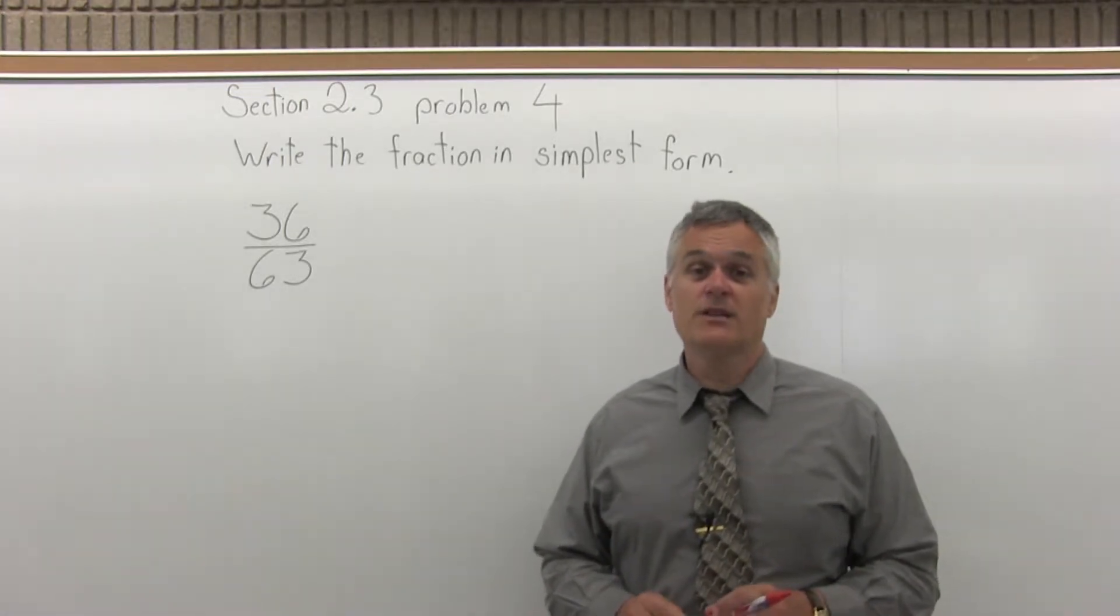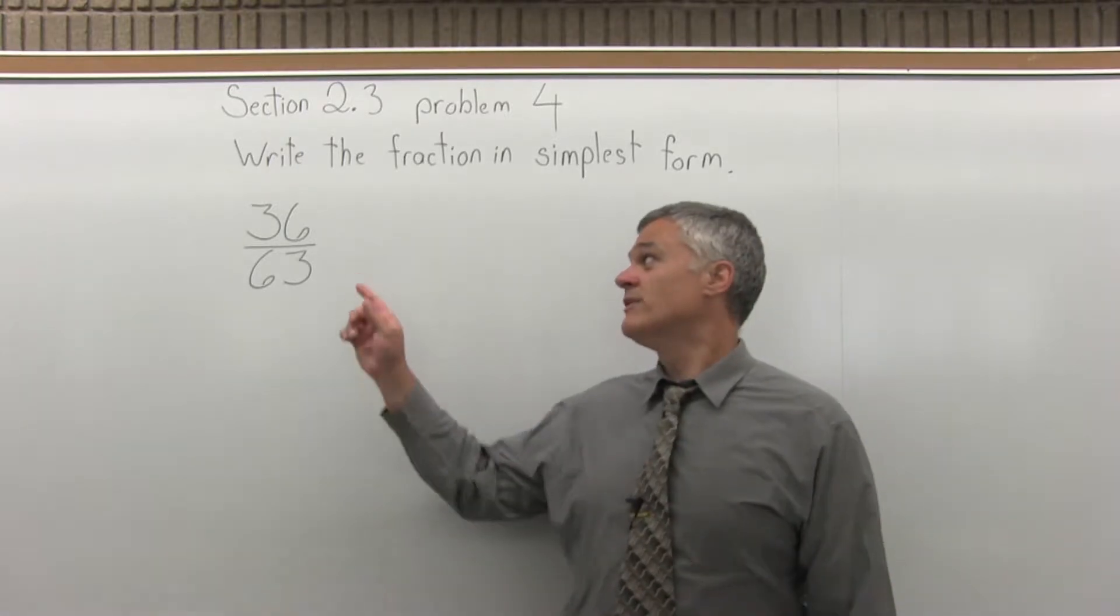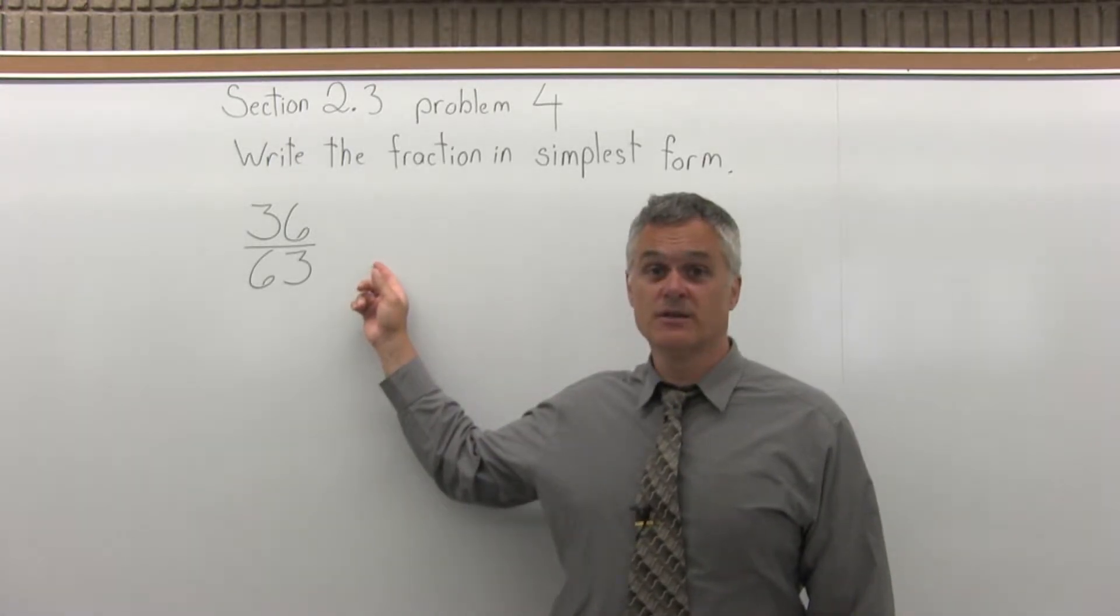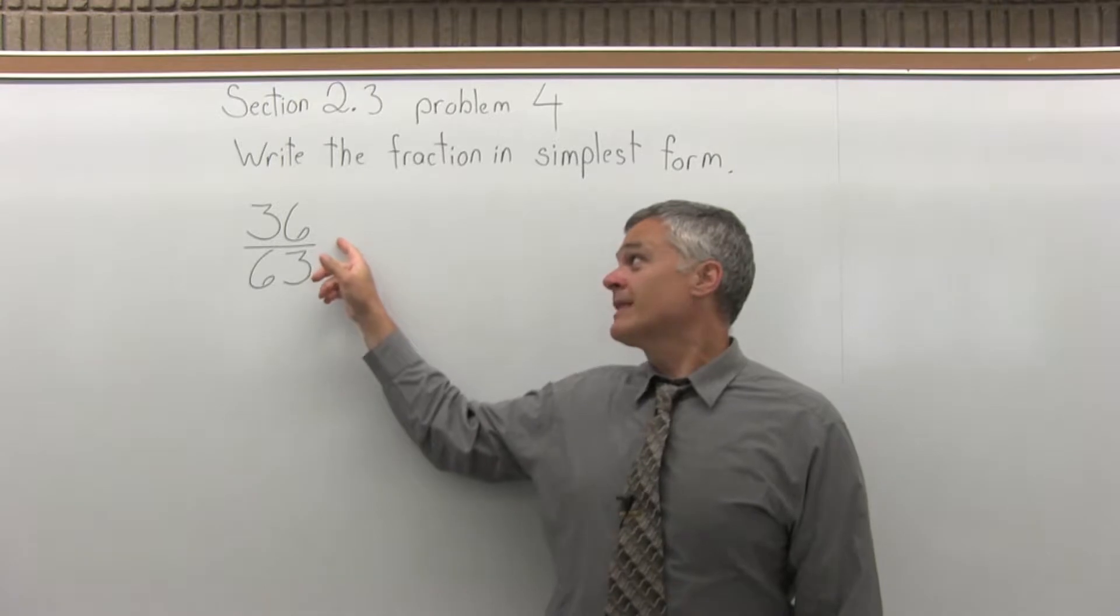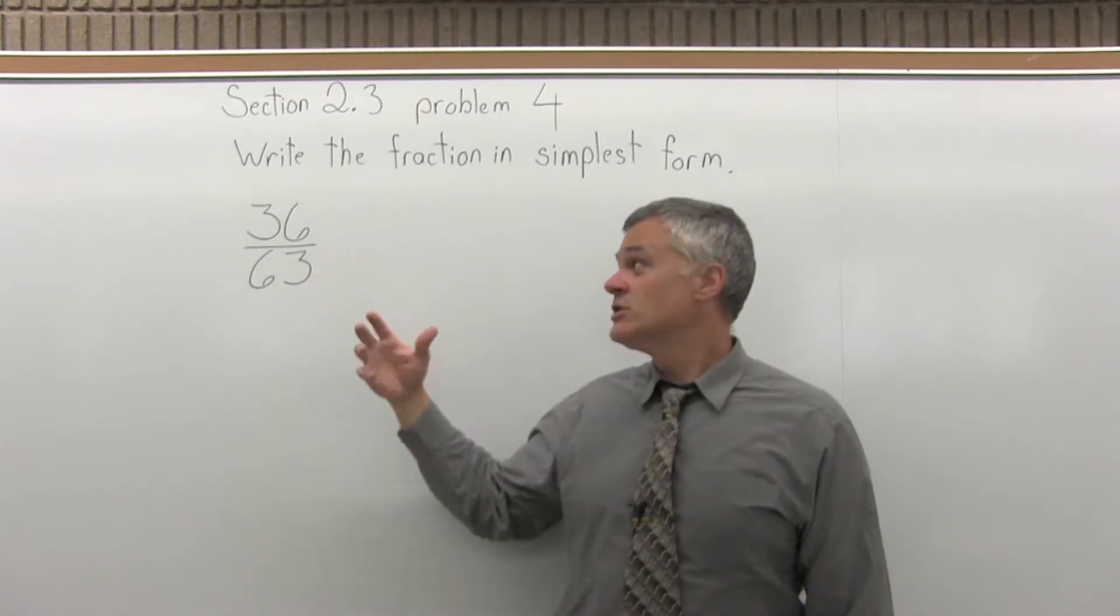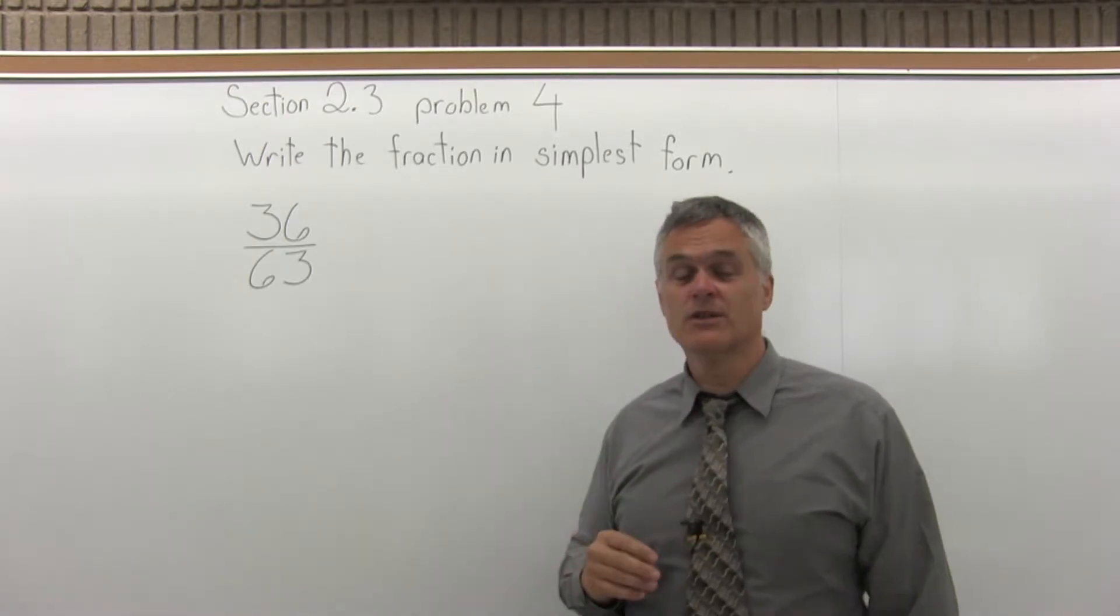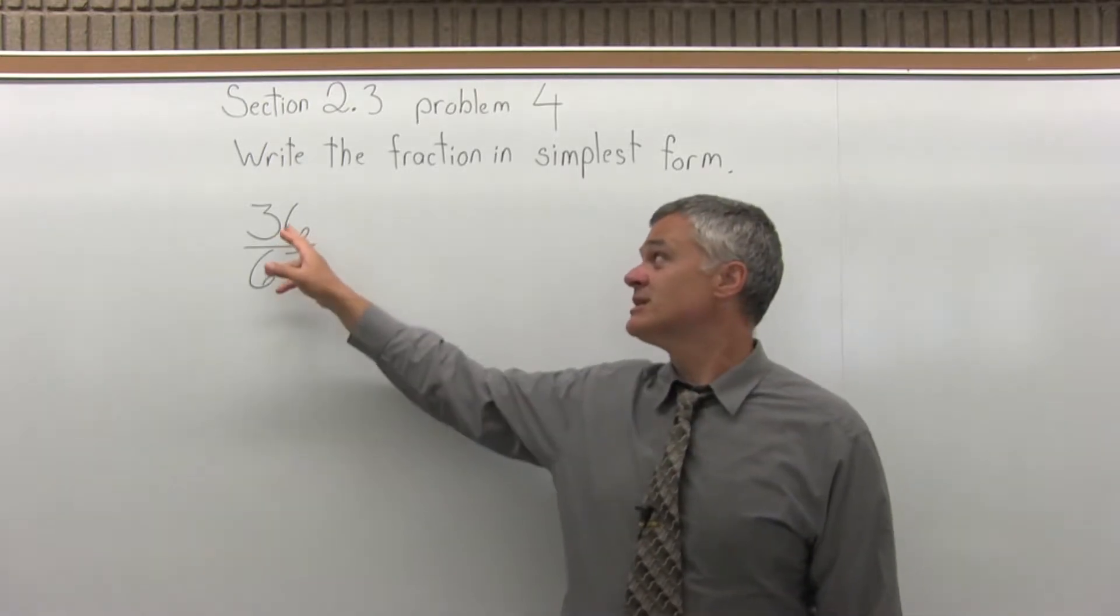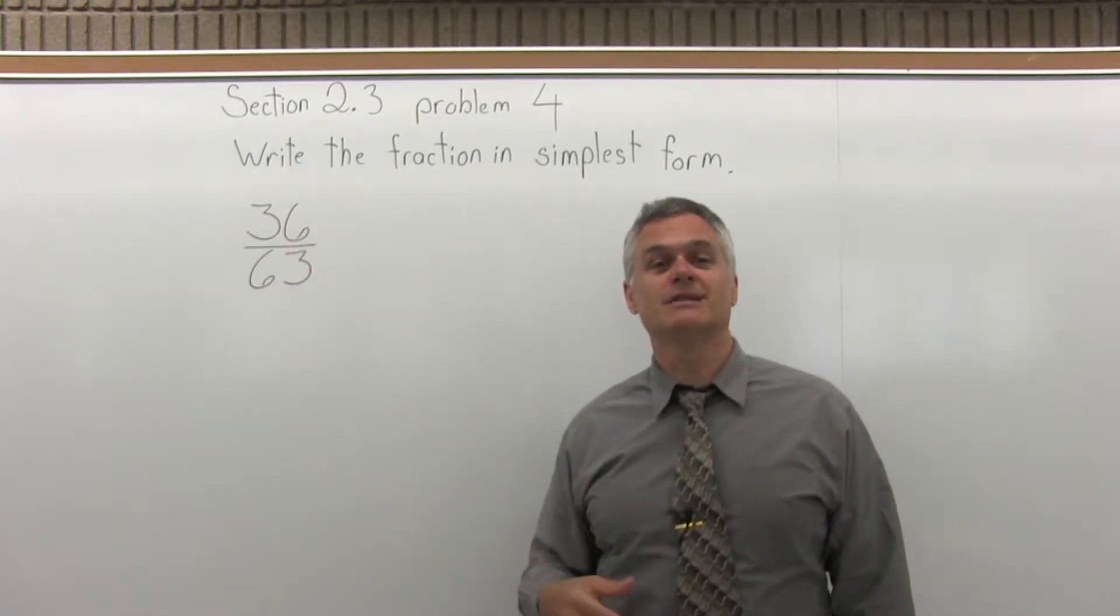So you want to find the largest value you can that will divide into both those numbers evenly. So as you start, they're not both even. I can't start with a 2. So next we could try a 3, and the trick with a 3 is to add the digits together and see if 3 divides into the result.